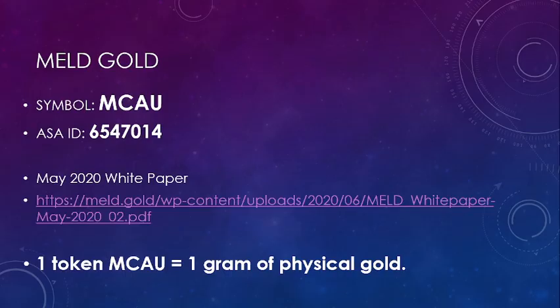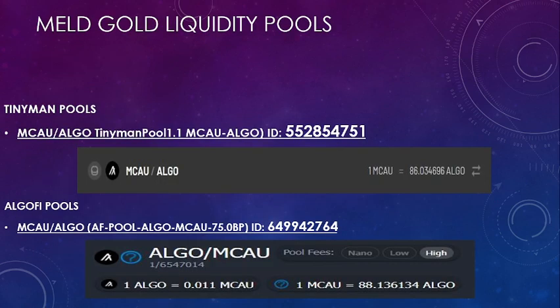Using what we know, I'm going to bring in Meld Gold — this is an ASA. I'm not going to go into too much detail about the company, but Meld Gold is a token that basically represents one gram of physical gold. I've linked the white paper below if you want to read more. Using what we know — that silver and precious metals in general have been maintaining and increasing their purchasing power relative to Algorand — if I link Algo to MCAU, I know that Algorand is probably going to devalue more against the gold token, and we're essentially using impermanent loss to go long Algo by default.